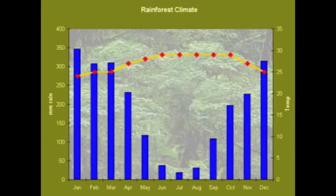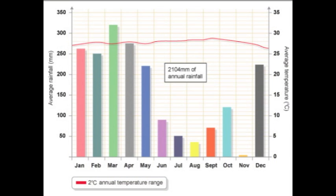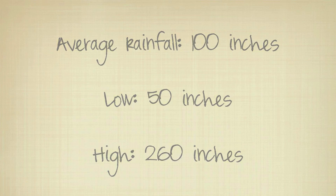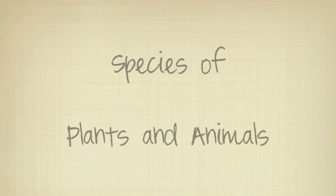The temperature of the tropical rainforest ranges from 68 to 93 degrees, and the average humidity is about 77%. The average rainfall is about 100 inches a year, but can get as low as 50 inches and as high as 260 inches of rain a year.